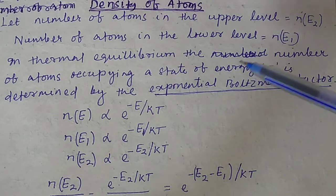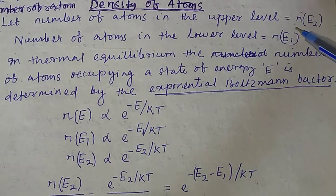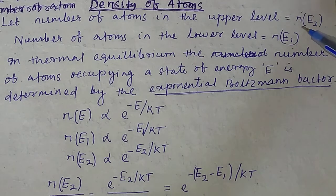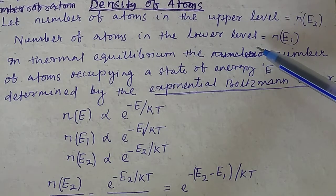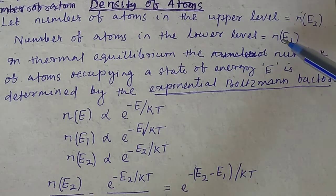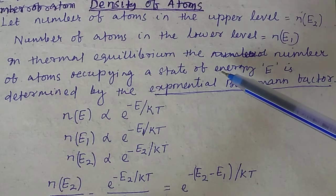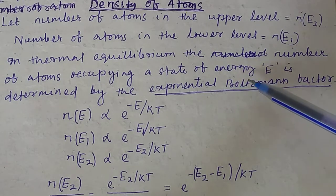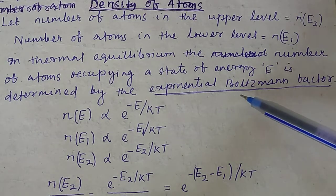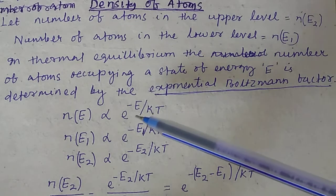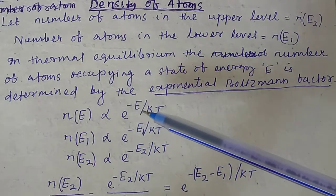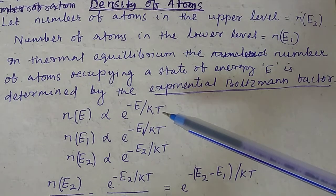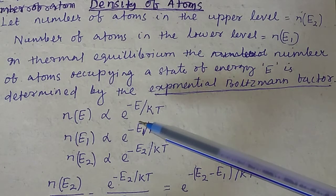From the density of atoms, we know that the number of atoms in the upper level — the higher energy state — is N(E2), where E2 is the energy state and N is the number. The number of atoms in the lower energy level is N(E1). In thermal equilibrium, the number of atoms occupying a state of energy E is determined by the exponential Boltzmann factor: N(E) is proportional to e to the power of minus E divided by KT, where K is the Boltzmann constant and T is the absolute temperature.